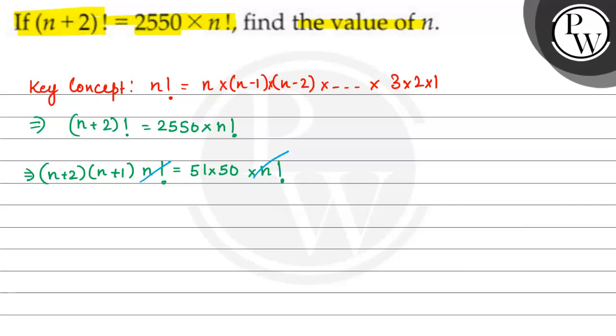If I know the factors of 2550, then n plus 2 multiplied by n plus 1 is equal to 51 multiplied by 50. This implies n is equal to 49.